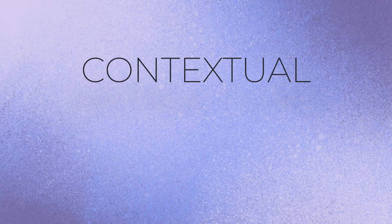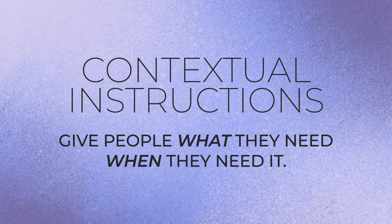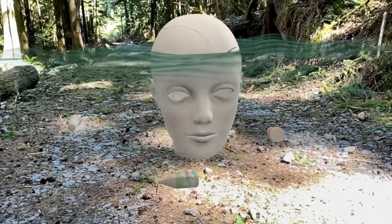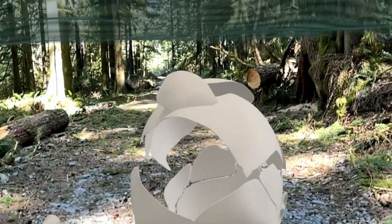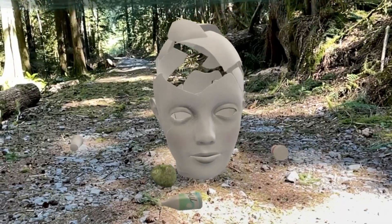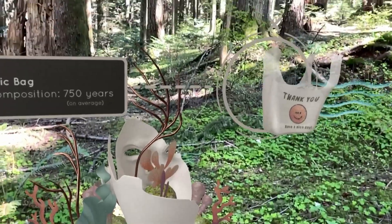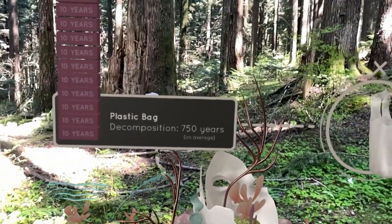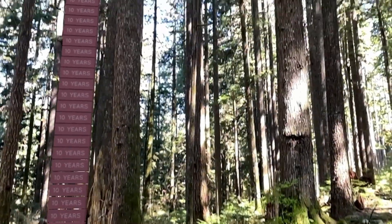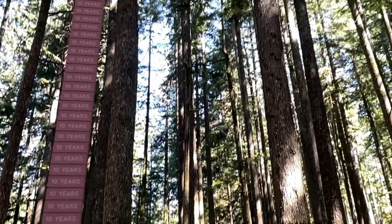Number one: contextual instructions. This means giving people information when they need it, rather than all at once. In AR experiences, you're combining the physical reality with the digital reality, and there is a lot of data to process and parse. So the best way to keep a participant focused and clear on what they're to do next is to reveal the information when they need it.